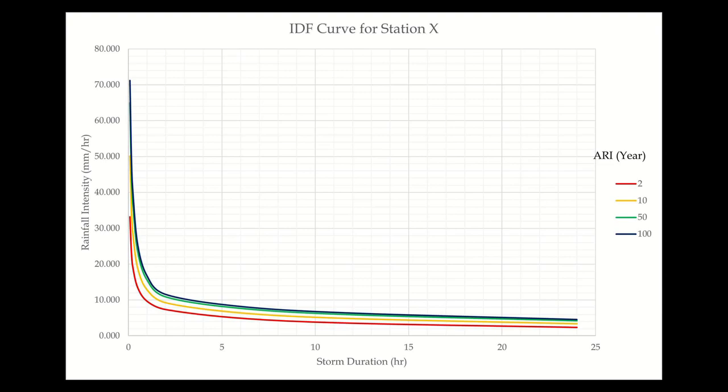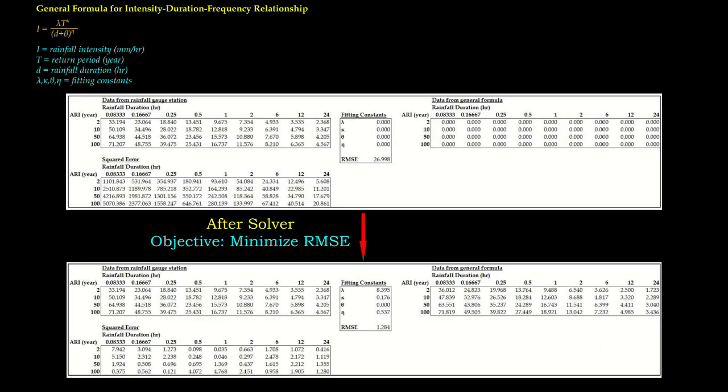We can fit the intensity-duration-frequency relationship using one general formula. To do this with ease, we may use the solver from Microsoft Excel. Let's prepare two sets of data: one extracted from the point rainfall data, while the other is calculated using the general equation. As for now, all the fitting constants are zero.